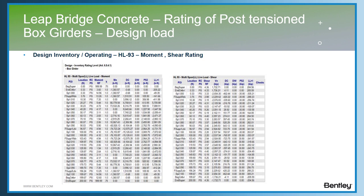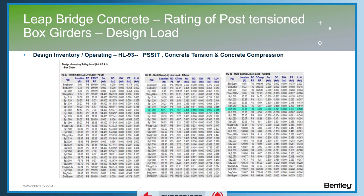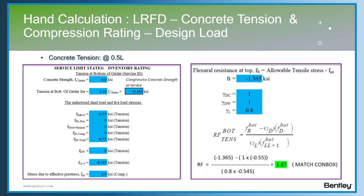In the next report, the additional reports generated are for pre-stress steel tension, concrete tension, and concrete compression. I would like to show the hand calculation for concrete tension and compression at mid-span, the ones which I have highlighted right now. You can get the allowable stress, the dead load stress, and the live load stress information here. That information is inputted in your spreadsheet or you can do your hand calculation quickly. The final resistance at the top, FR, is calculated, which is equal to allowable tensile stress minus the stress due to effective pre-stress, FPE.